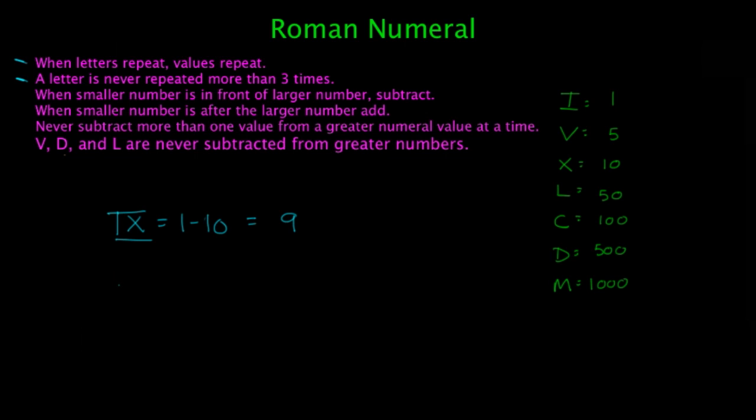Another example of this can be I and V. So the I is in front of the larger number. So 1 minus 5, that's going to equal 4. Another one might be CD. And that's going to be 100 minus 500. And so CD is actually going to be the value 400.